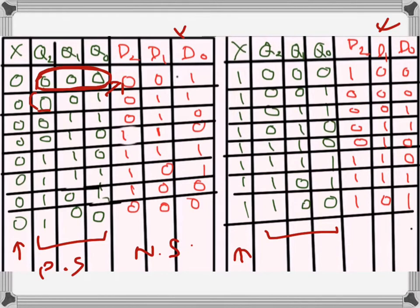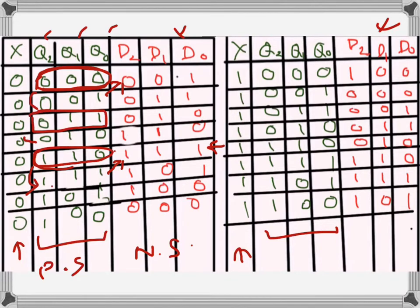These are the D inputs. So we want the next state to appear at the input during the present state — that is the present state, and this is the next state. When the present state is 1 1 0, the next state is 1 1 1, so the D inputs should be 1 1 1. With the clock, D2, D1, D0 goes to Q2, Q1, Q0. So when counting up, whatever is the next state must be placed at the inputs. That's how we write the truth table for counting up.